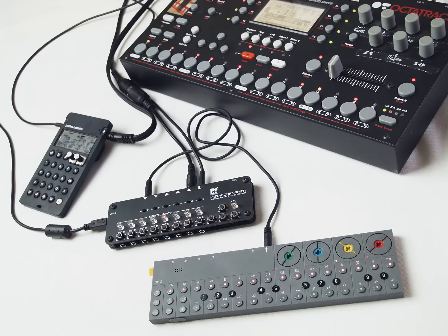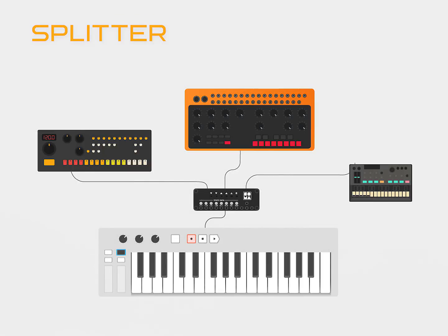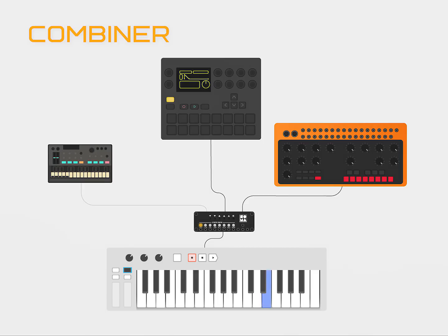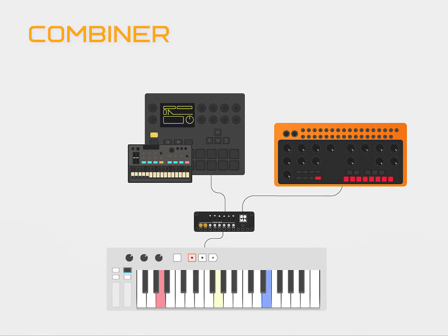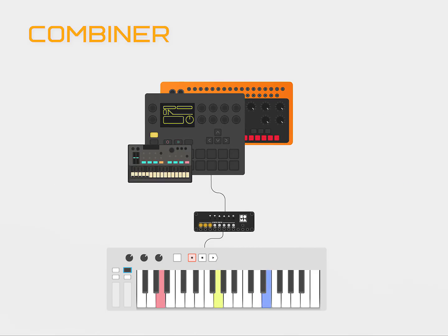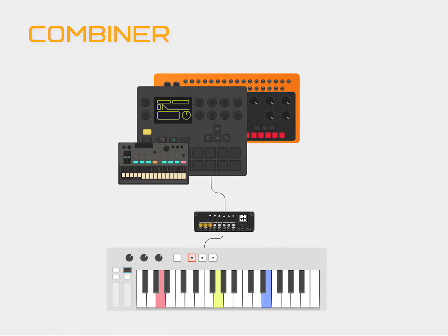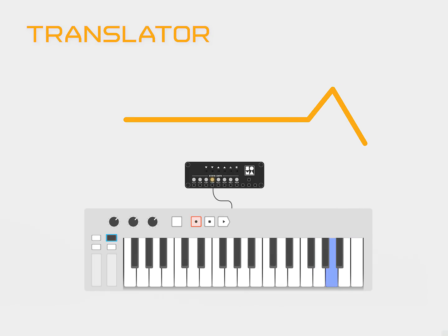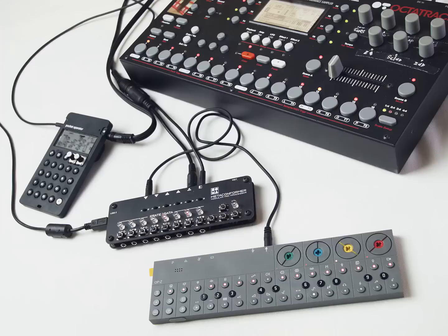At release, each Metaconformer can operate in one of three processing modes. The Splitter divides one MIDI channel between multiple instruments. The Combiner combines monophonic synthesizers and samplers into one multitimbral superpolyphonic instrument. The Translator allows you to play on the CC parameters of the sound core by notes from the keyboard. Other modes will appear in the future.